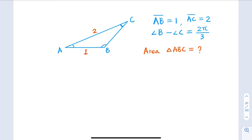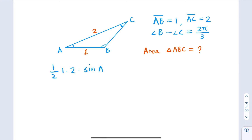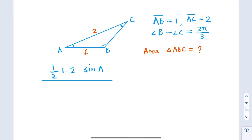We know that the area is actually one half of the two sides, 1 times 2, times sine A. That's going to be our answer, but we need to find out what sine A is.